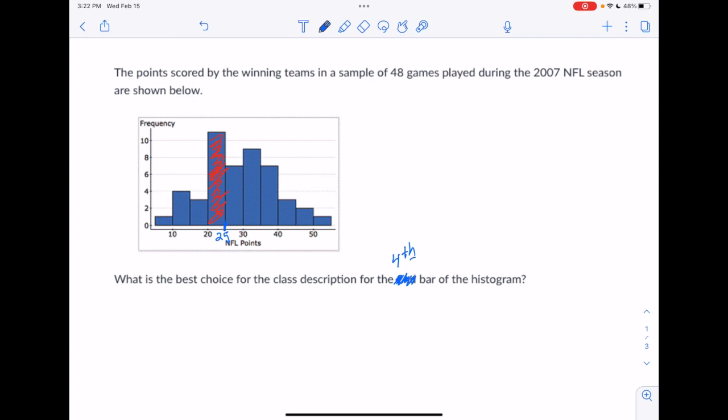So we have two choices for what we would do there. We could have 20 through less than 25. That's what we would do if the data was continuous. Or we could go 20 through the largest value that's possible in that class if it was discrete.